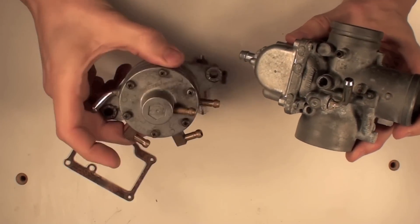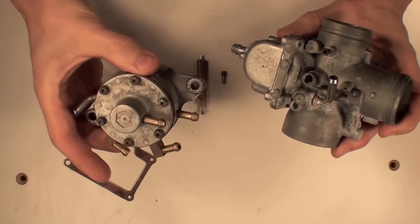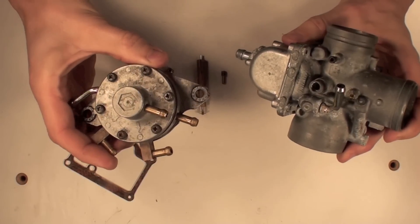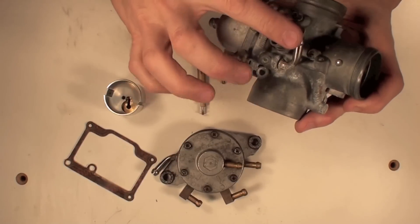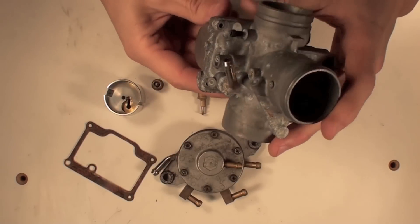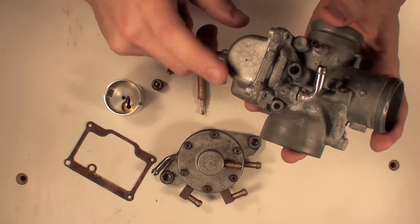So the fuel has to get to your carburetor, and that is done by the fuel pump. This is a pulse driven pump that runs off your crankcase pulse line. Fuel flows through the pump, into your inlet, and it fills the bowl on your carburetor.